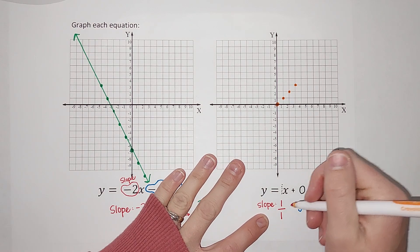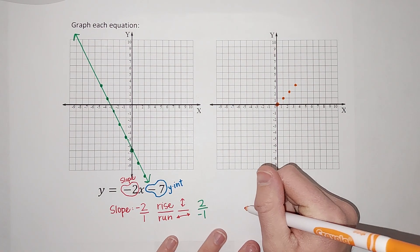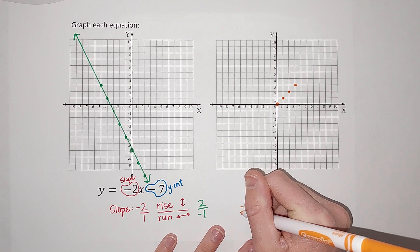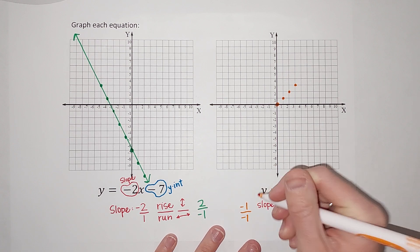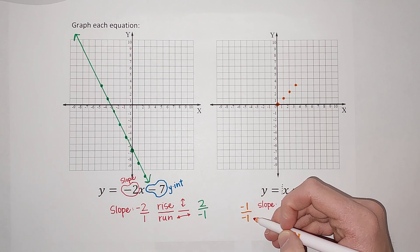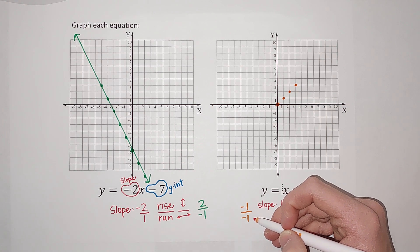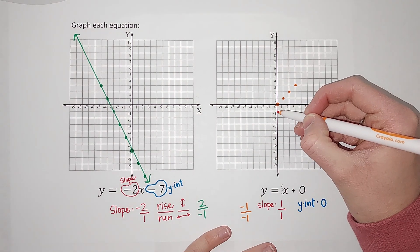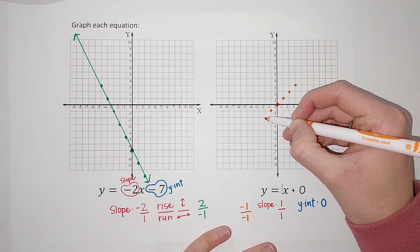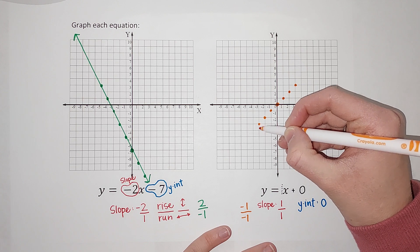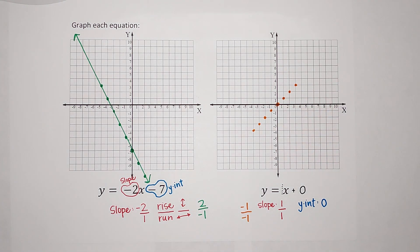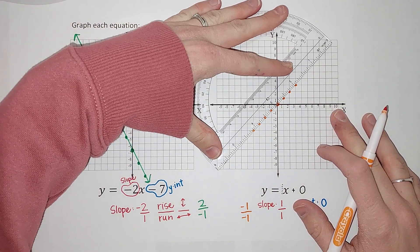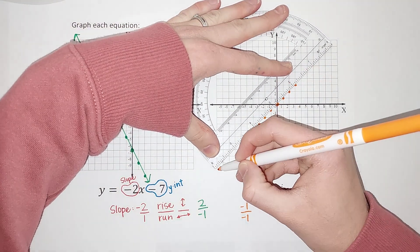Now, I could also write this as negative 1 over negative 1. Does that sound crazy? So this could also be written as negative 1 over negative 1. Why? Because negative 1 divided by negative 1 simplifies down to 1. So it's the same thing. Basically, all that is saying is I can go this way too. Down 1 left 1. Down 1 left 1. And again, I could literally go wherever. So there is my line.